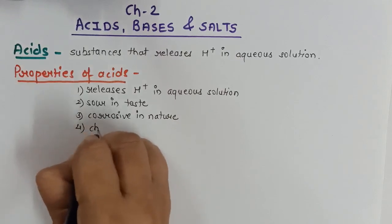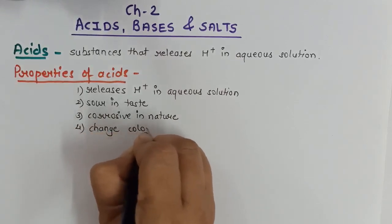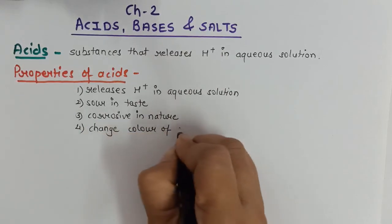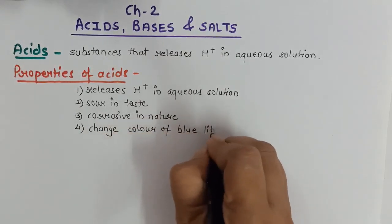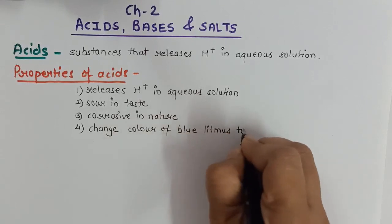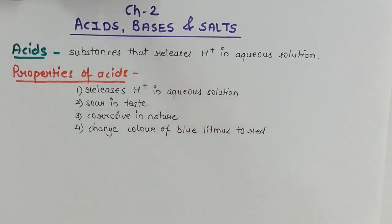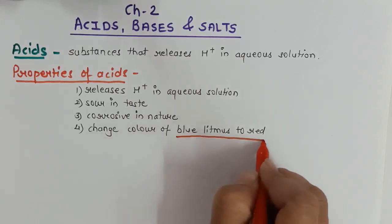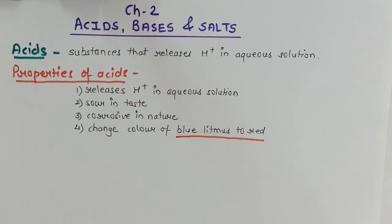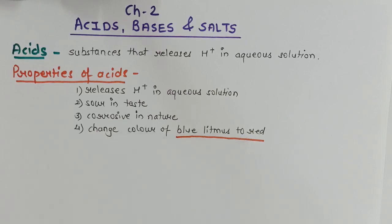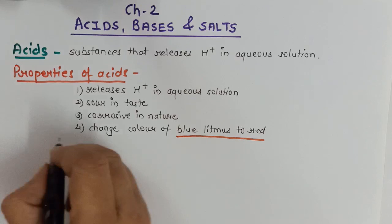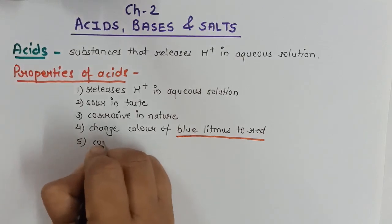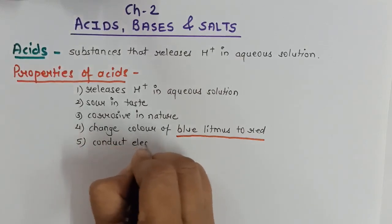Next, acids change the color of blue litmus to red. In chemistry, colors and odors are very specific, and you have to remember these. So the speciality of acid is that it changes the color of the indicator blue litmus to red. This indicator we are going to study in detail in today's part of the video. And lastly, acid conducts electricity.